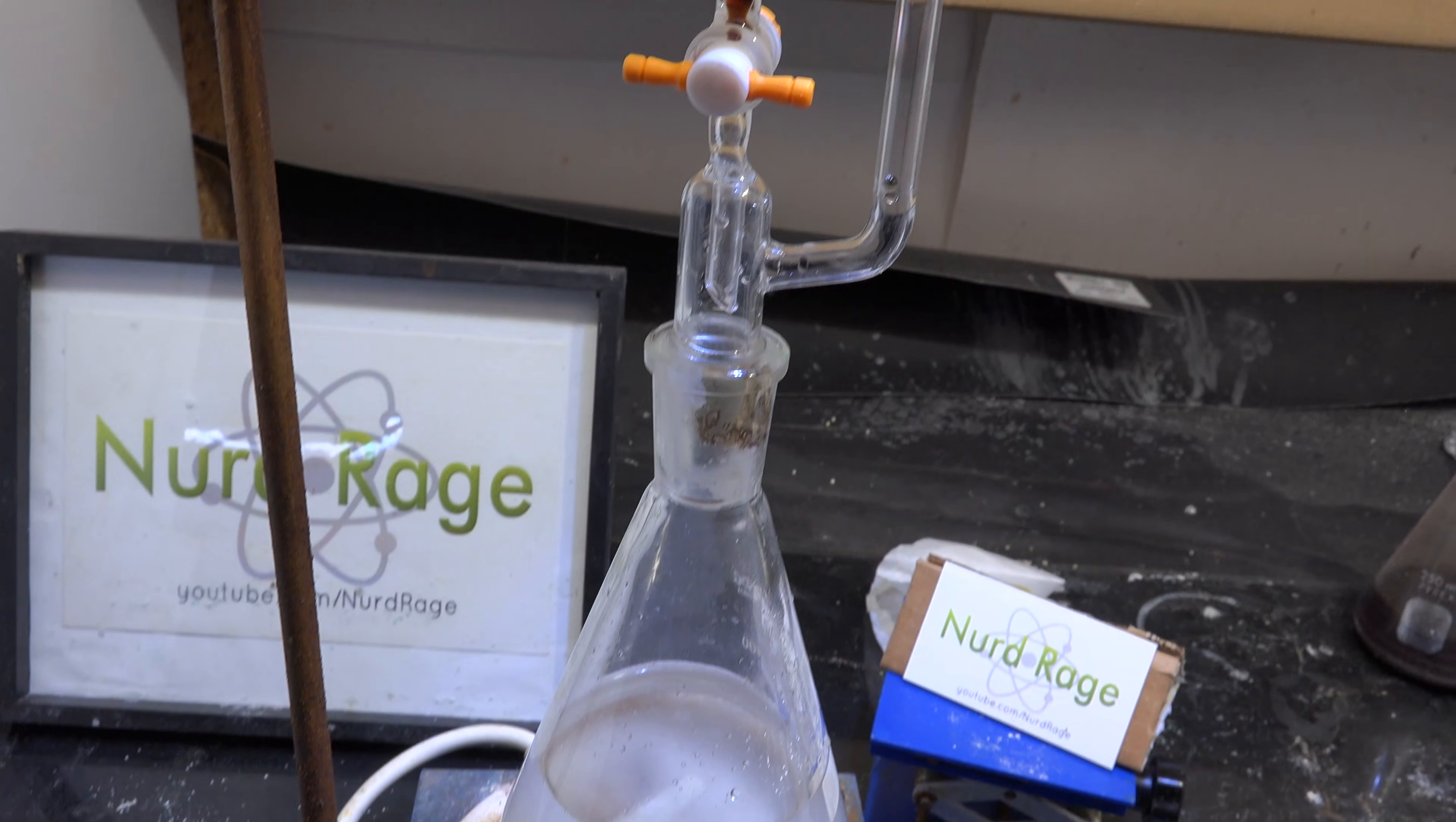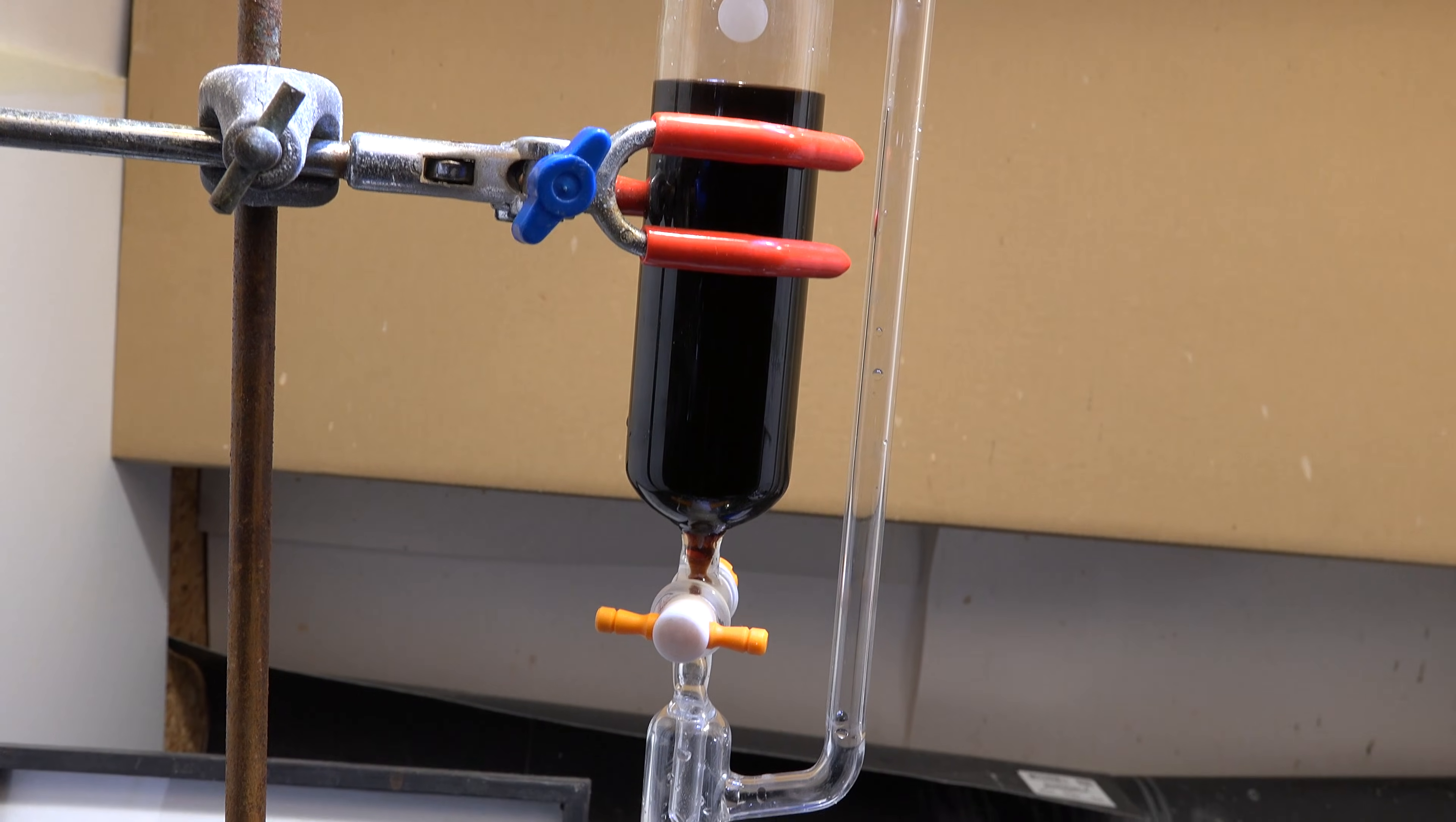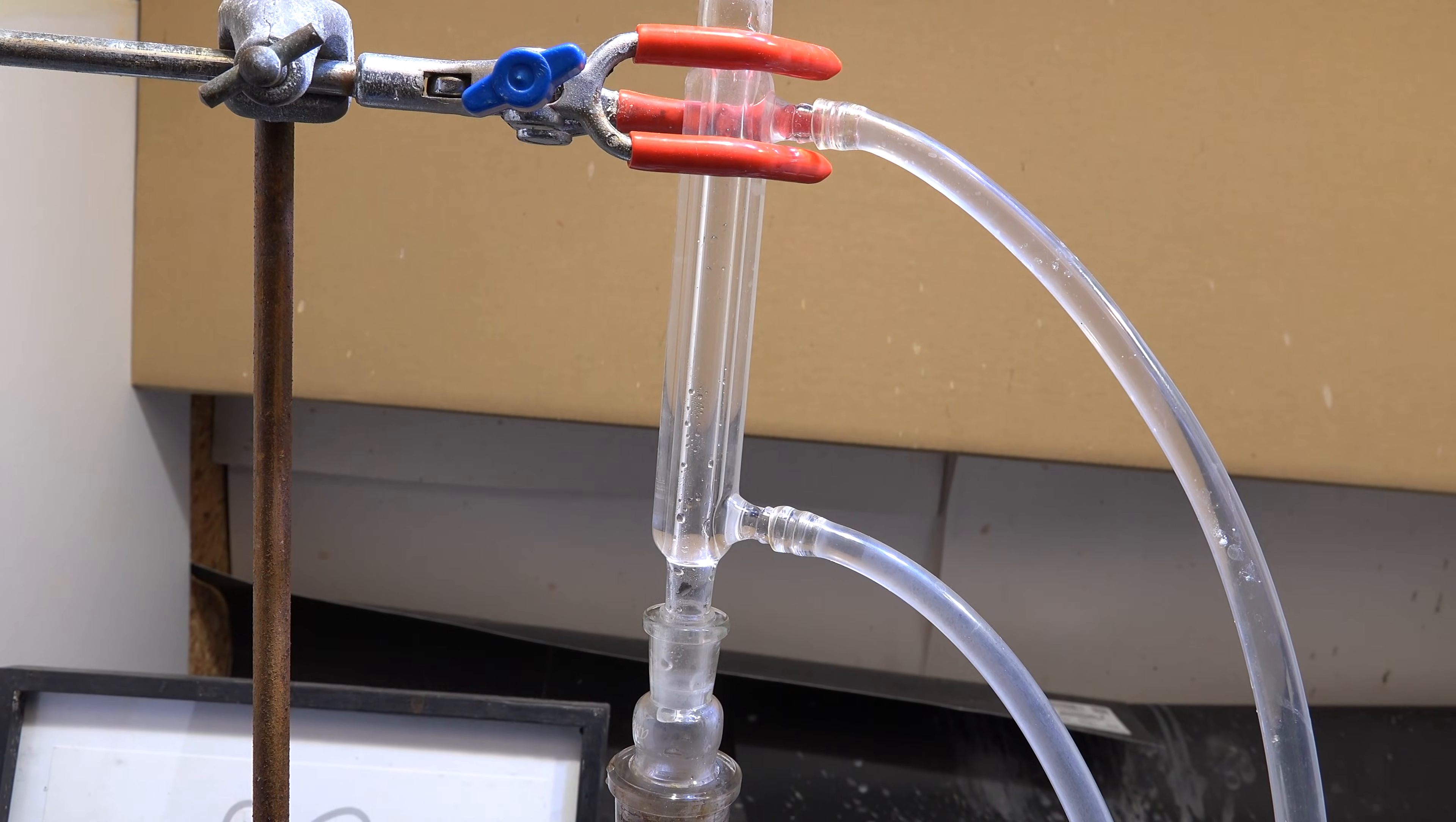To add in our sulfuric acid we set up a pressure equalized addition funnel filled with 100 mL of concentrated sulfuric acid. Mine is brown because I'm using low grade drain cleaner acid. We slowly drip in the sulfuric acid careful not to boil the mixture as it heats up. Once it's all in, we replace the addition funnel with a reflux condenser.